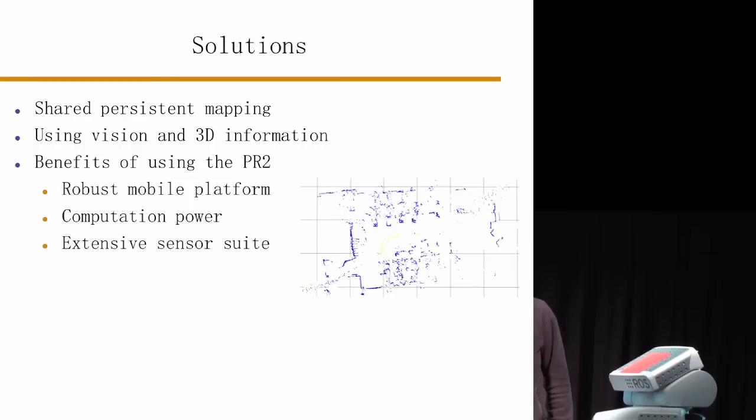Here's an example of just a 2D laser scanner map of one of the floors in the Stata area. That's where we are planning to address with the PR2. Using not just lasers but also the vision and 3D information to have that in the description of the world.